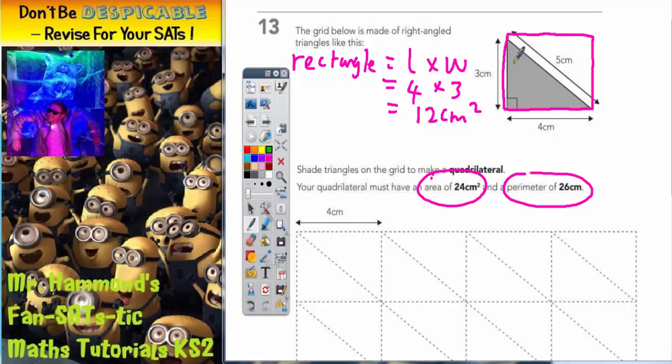However, the triangle is only half of this. So the area of the triangle would be half of this 12cm squared. The area of one triangle would be 6cm squared.